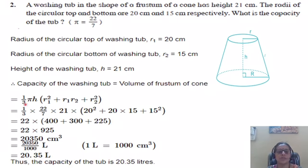So, it is one third pi H into R1 square plus R1 R2 plus R2 square. Substitute the values. H is 21, R1 square, R1 into R2 and R2 square. Find out all these squares. Simplify it. So, you have the capacity of the tub is 20.35 litres. This question is for three marks.